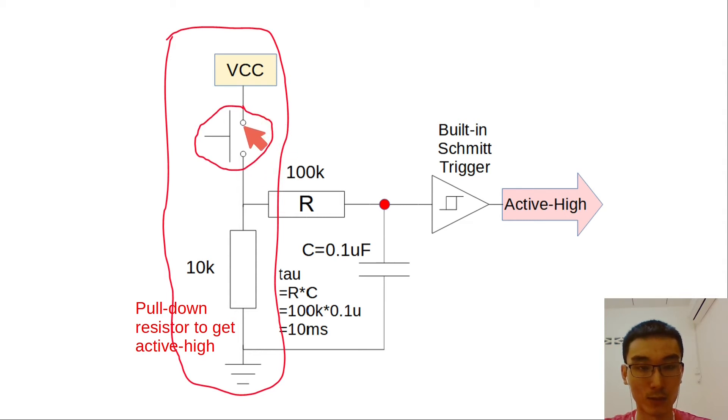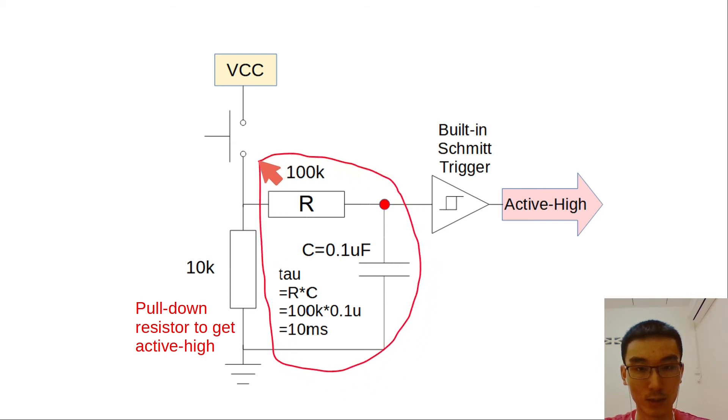Therefore we introduce a low pass filter consisting of a resistor and capacitor to filter out those high frequency noise. In this example we have an RC circuit with a time constant of 10 milliseconds. However, we still have one problem.